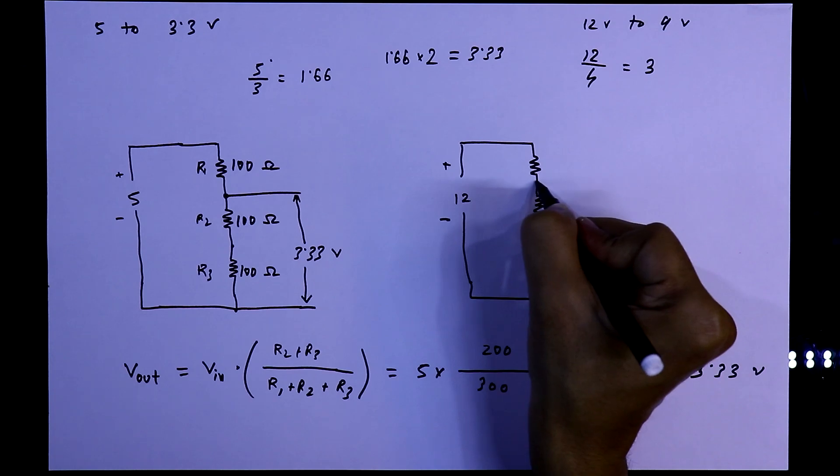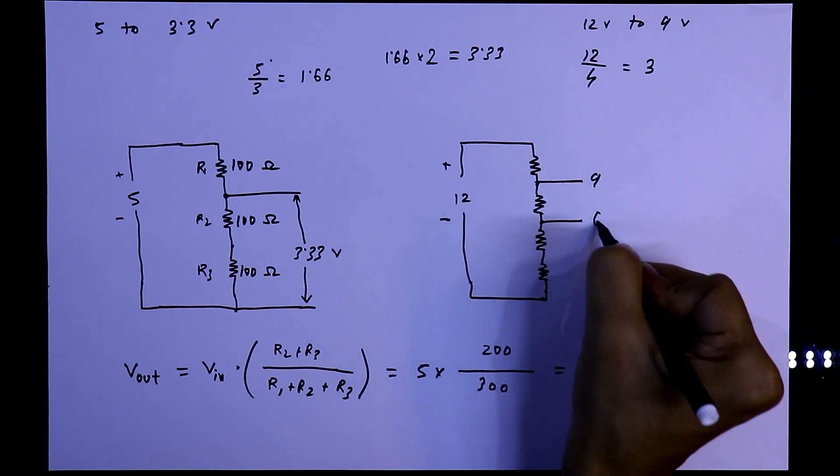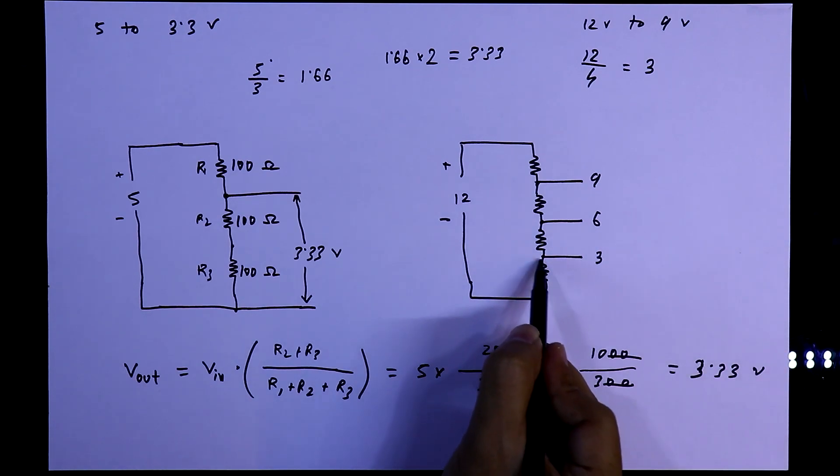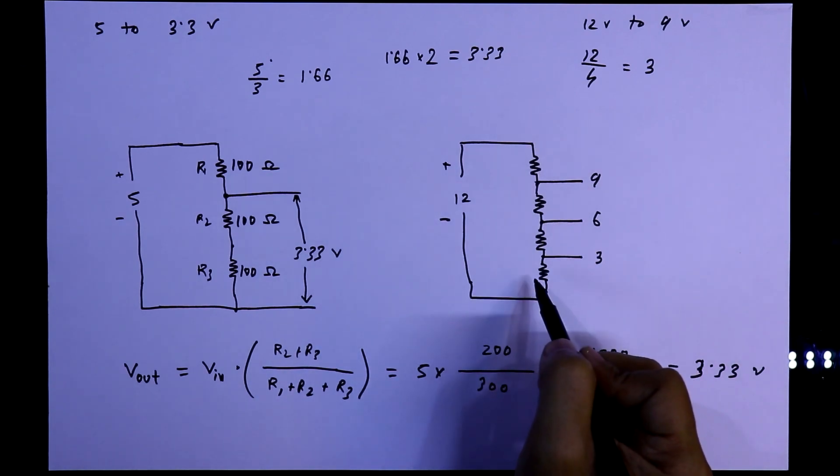At this point we will get 9 volt. At this point we will get 6 volt. And at this point we will get 3 volt. 3, 6, 9 and 12. We have divided it by 4 parts.